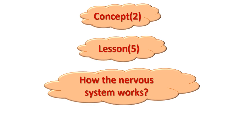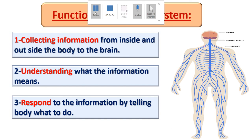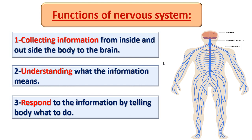Now let's start lesson number 4 from concept number 2, which is how the nervous system works. What is the function of the nervous system? First, the nervous system collects information or messages from inside and outside the body to the brain, using your sensory organs. You take information from outside your body by smelling, tasting, and touching, and from inside your body, like when you feel hungry. This is collecting information — number one.